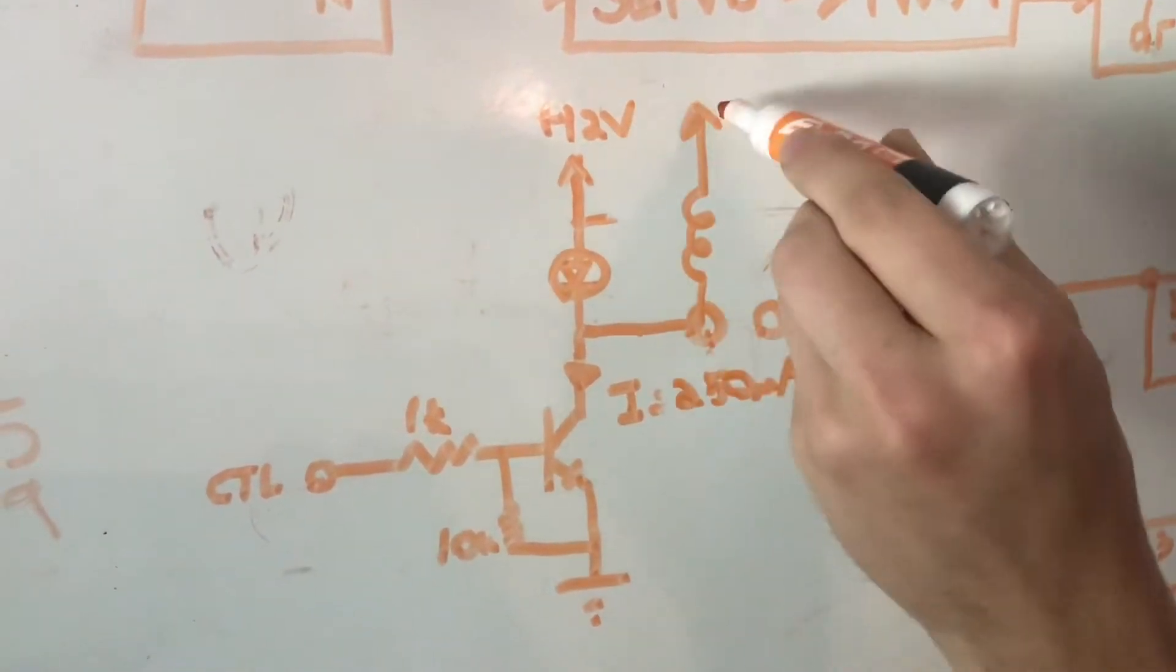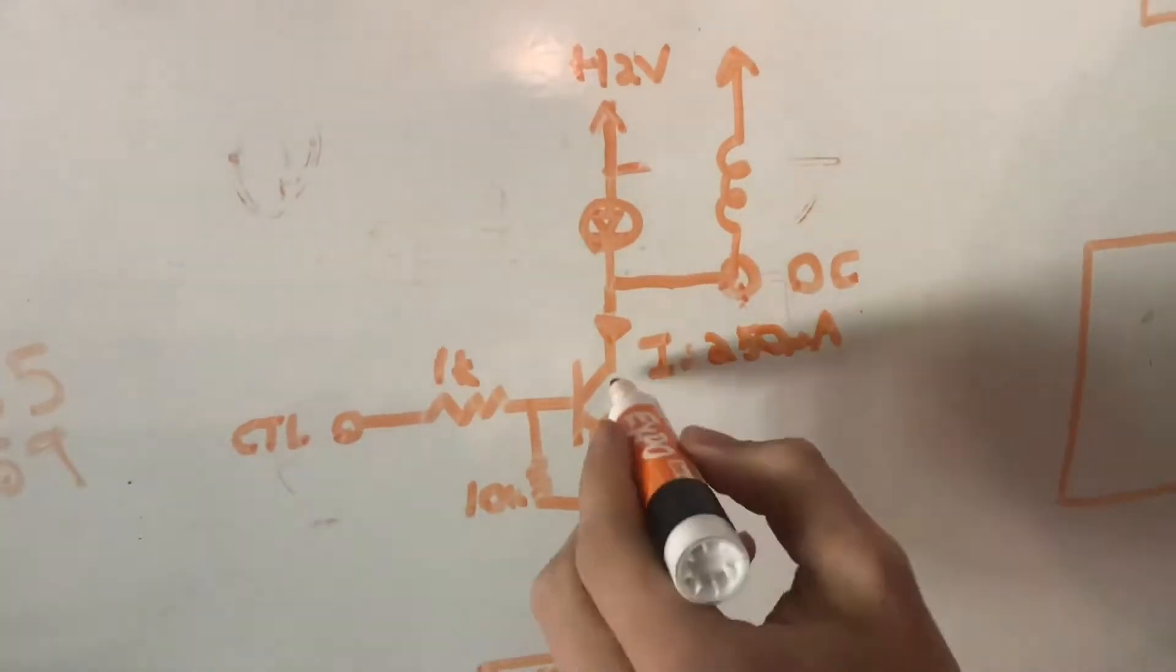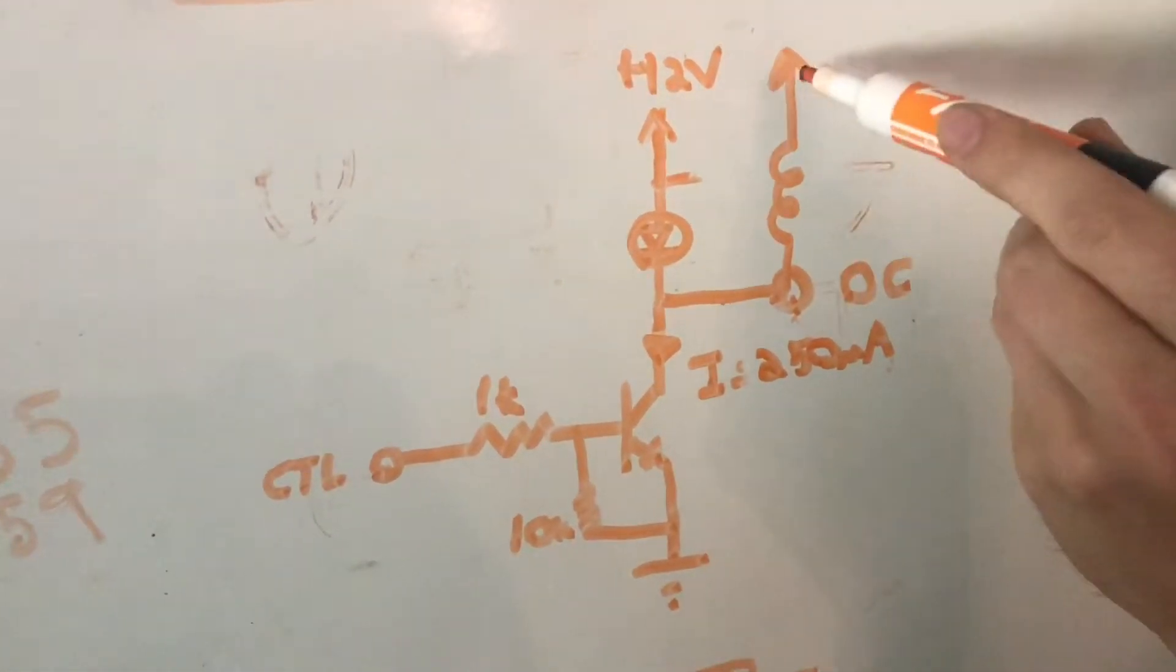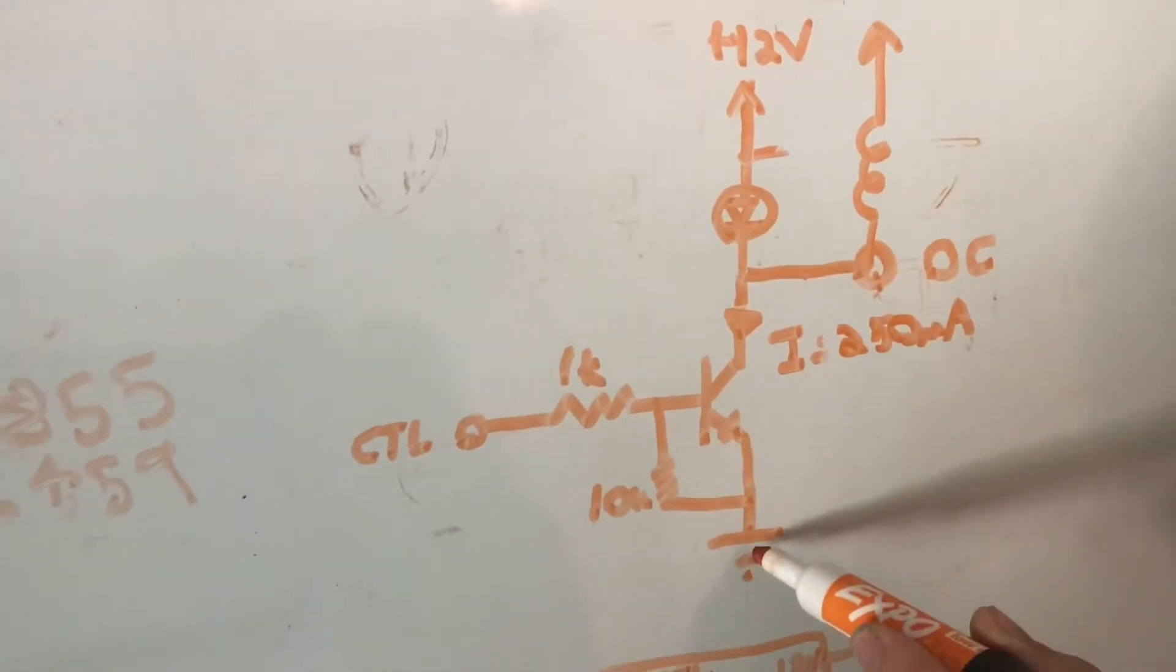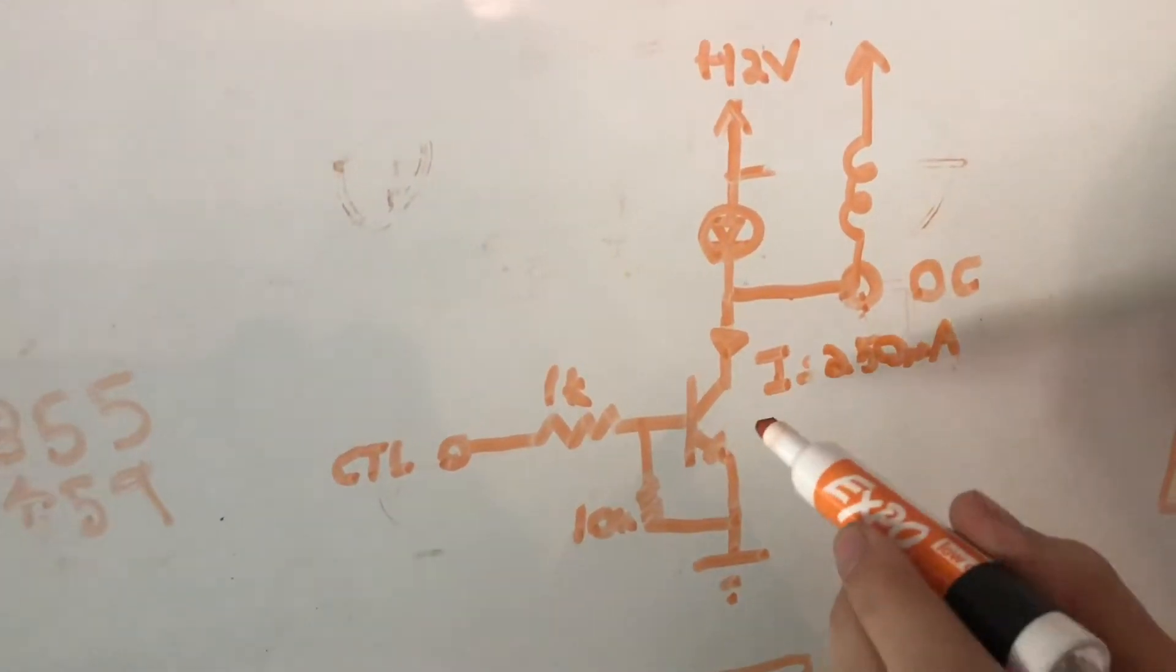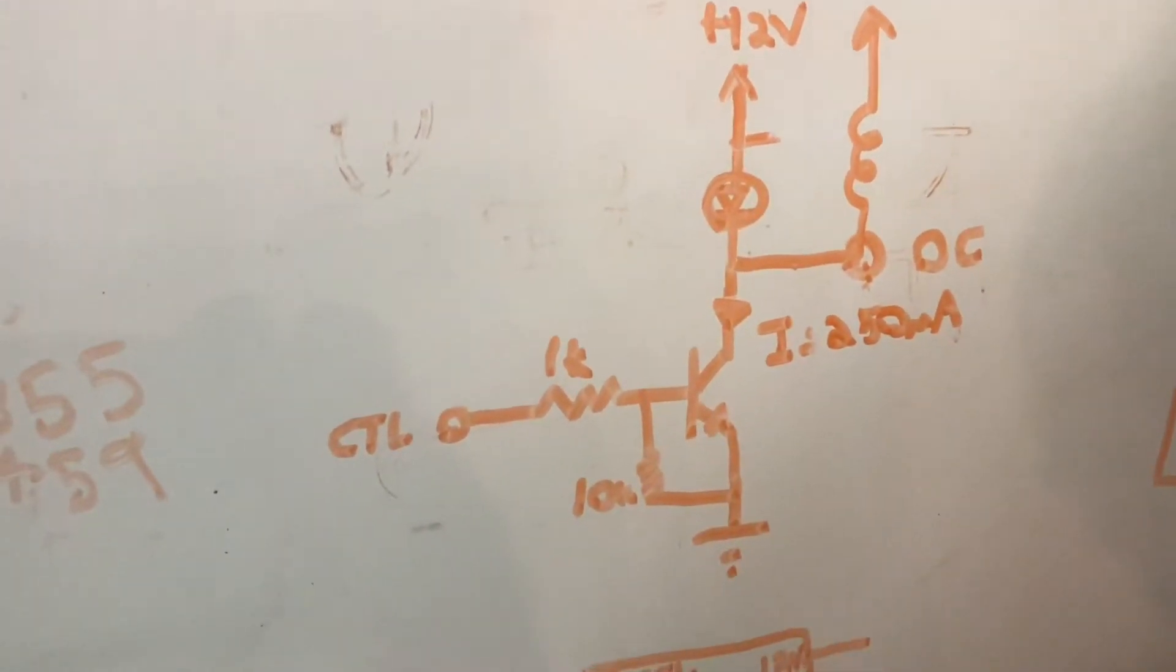And what happens is that whenever the relay switches on, it allows a path of current from 12 volts through the coil to ground. And when the transistor is off, there's no path of current and the relay switches off.